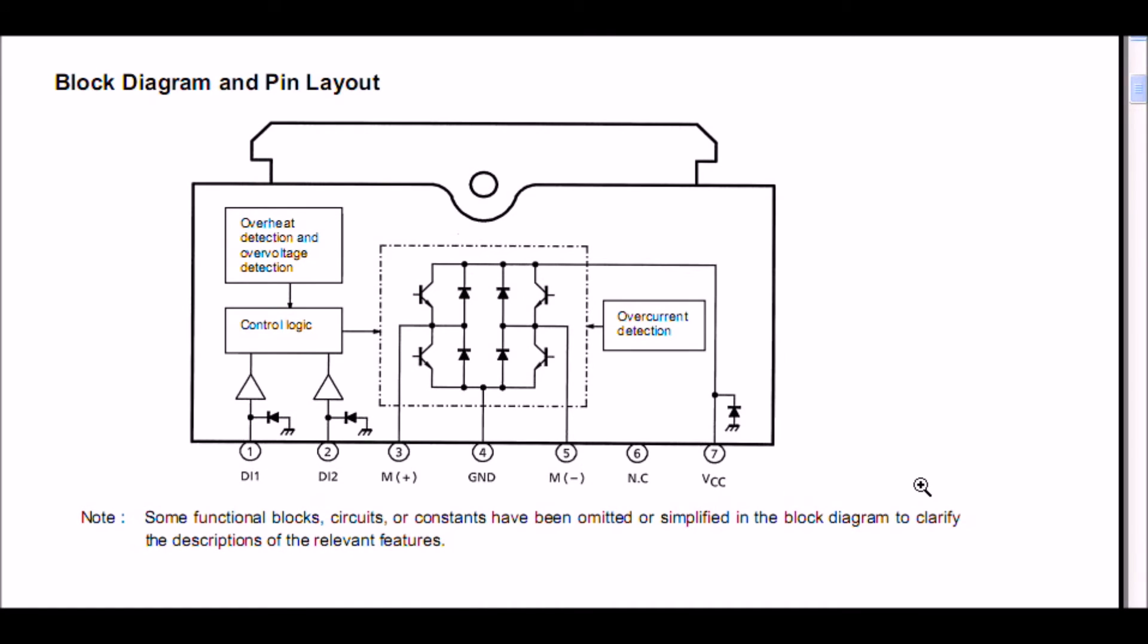Here's an electrical overview of the TA8050 used in this demo. It consists of two input pins, motor connections, a ground, and this goes to your plus VCC. As you can see, it has an internal H-bridge, overcurrent detection to shut it down, control logic, and some other overvoltage and overcurrent protection.